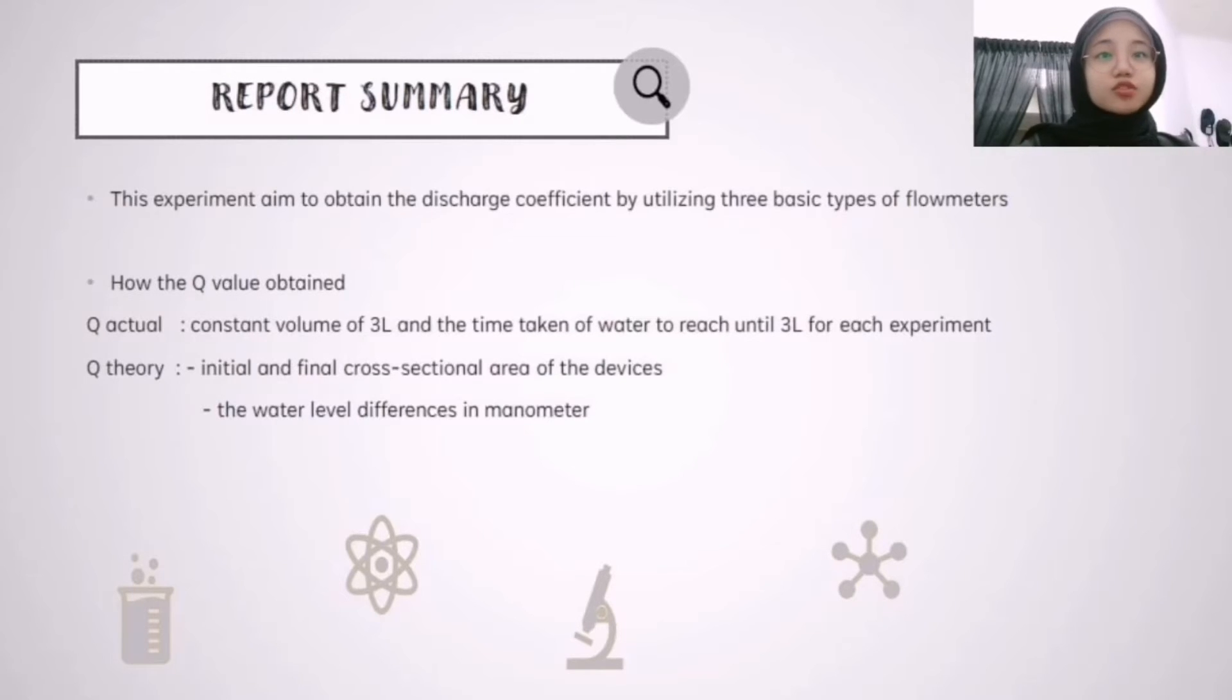There are two Qs to calculate: the actual Q and the theory Q. The actual Q is obtained by using the constant volume of 3 liter and the time taken of water to reach until 3 liter for each experiment.